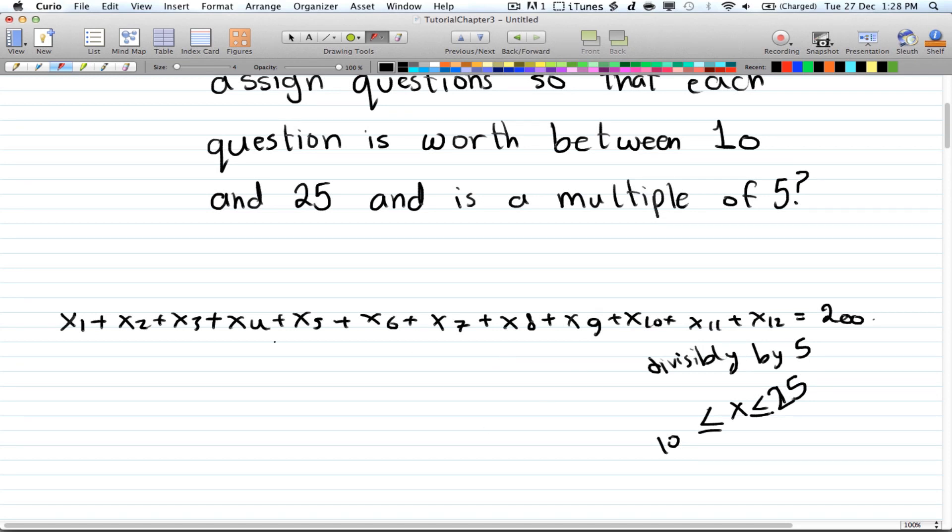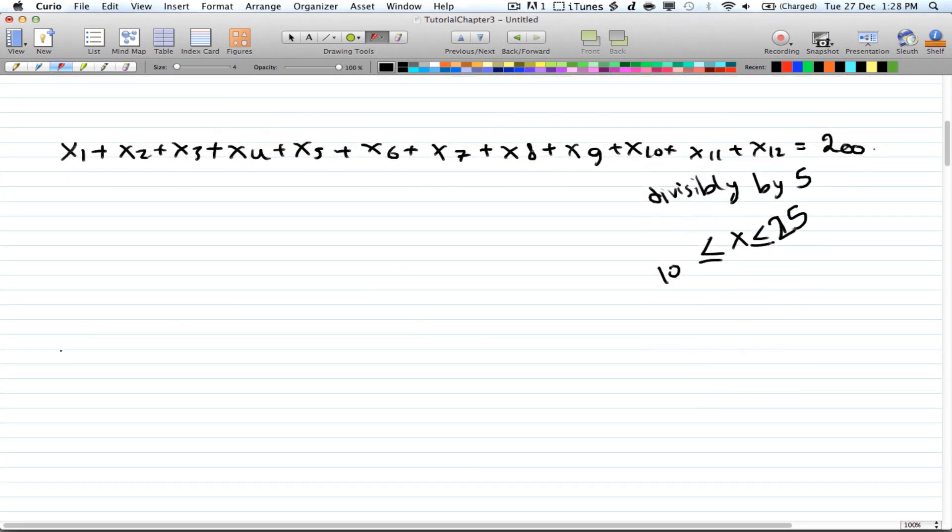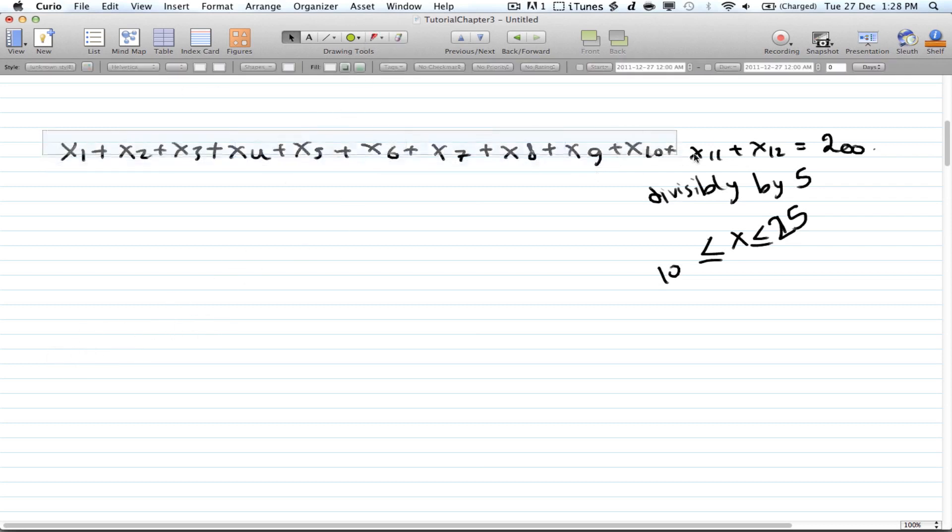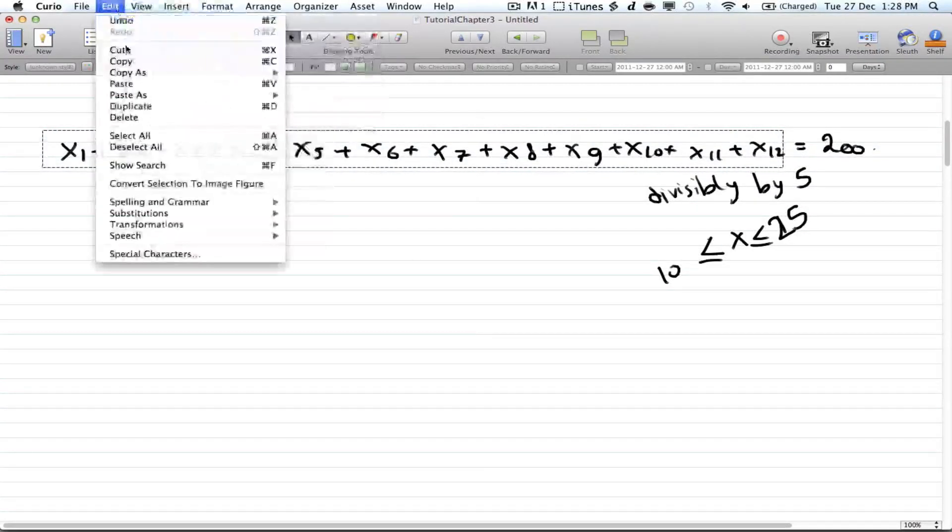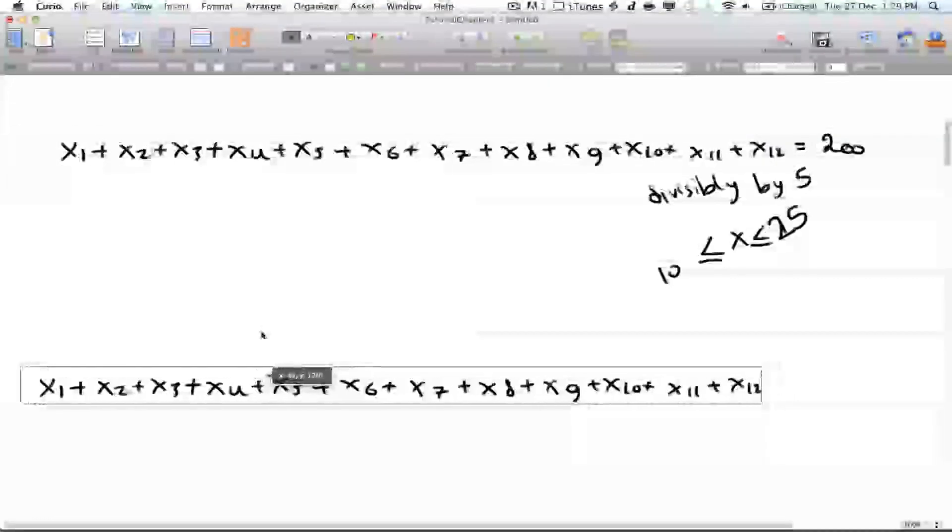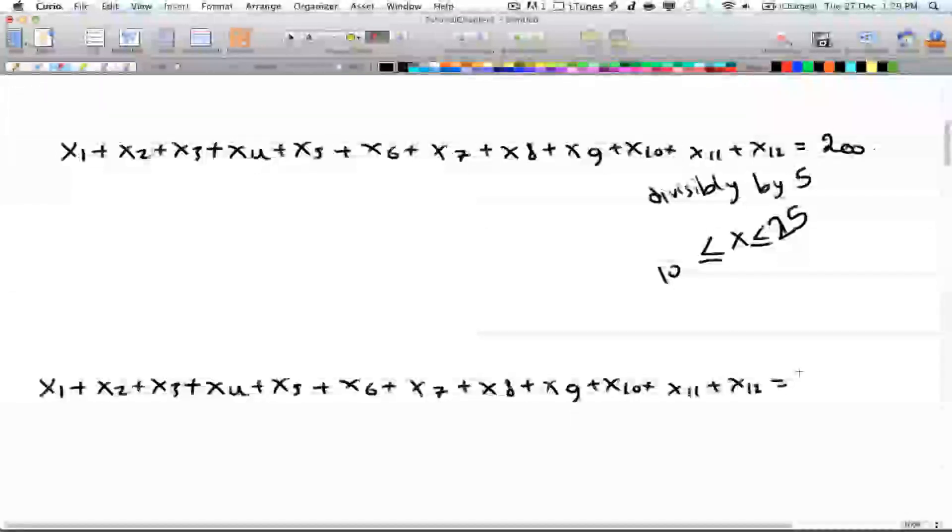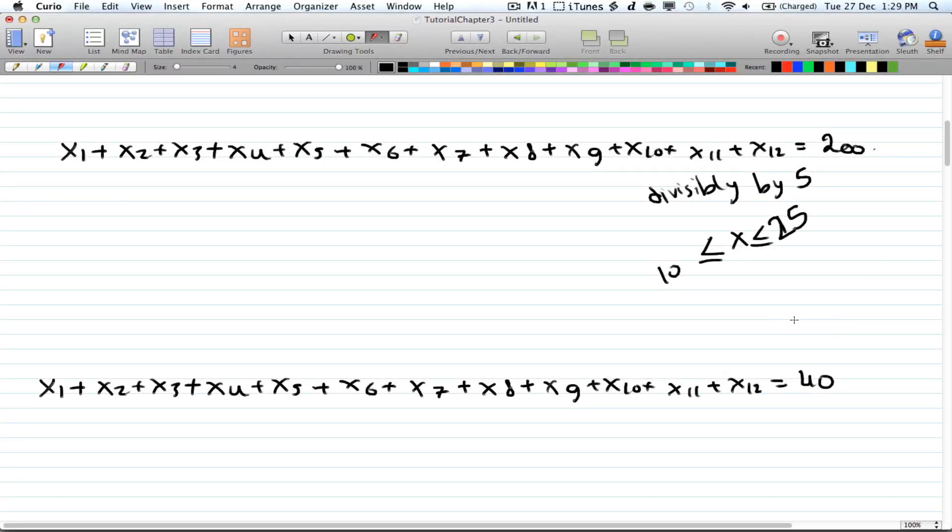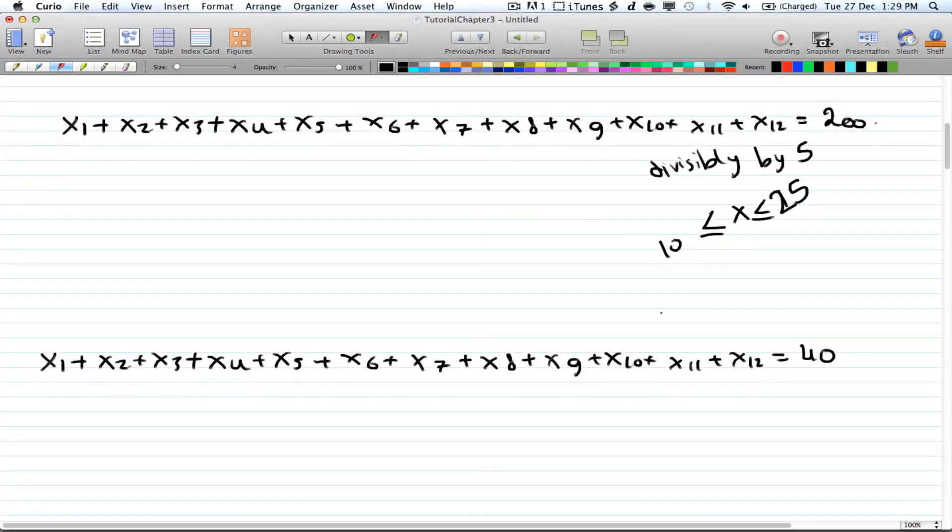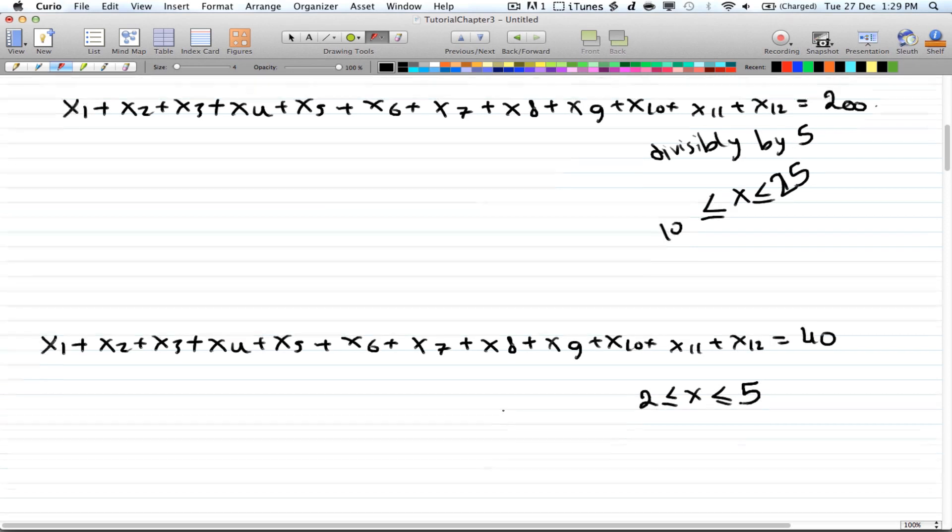The first thing you're going to do is divide everything by 5 to get rid of the divisible by 5 limit or condition. So when you divide everything by 5, you get x1 all the way to x12, and that will be equal to 40. Remember that when you divide by 5, even the limits get divided, so your limit will be from 2 to 5.